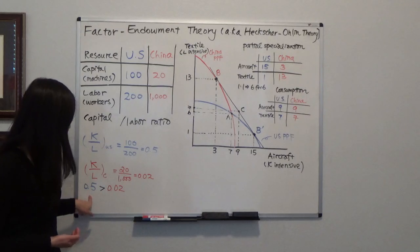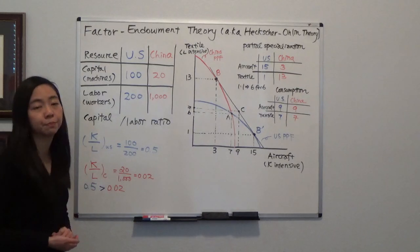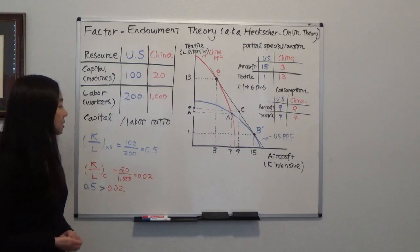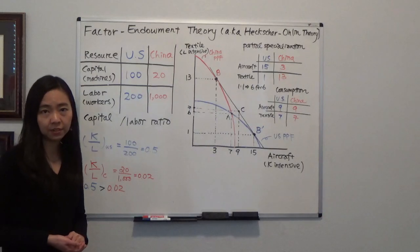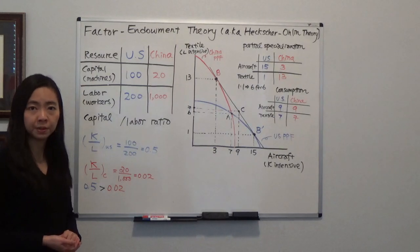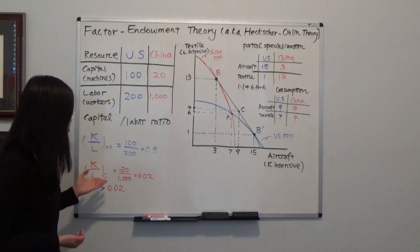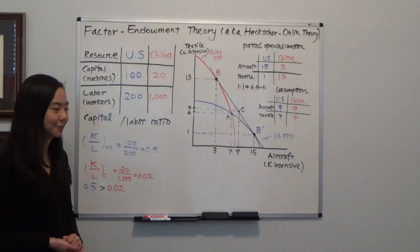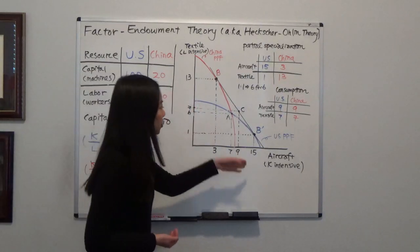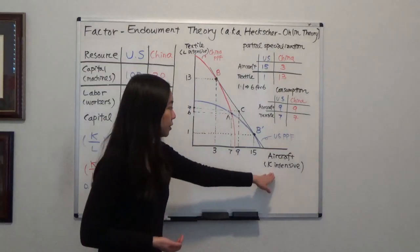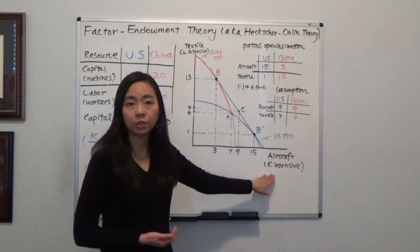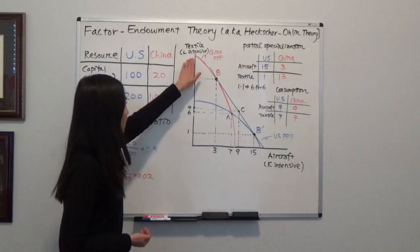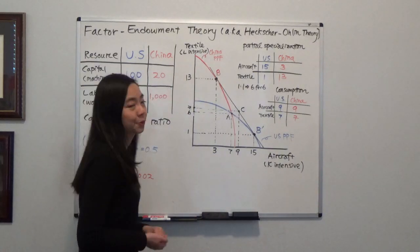You can see 0.5 is higher than 0.02, and therefore the U.S. is relatively capital abundant, whereas China is relatively labor abundant. Now suppose we have two goods: aircraft, which is capital-intensive, and textile, which is labor-intensive.